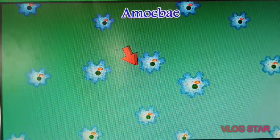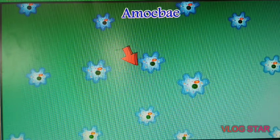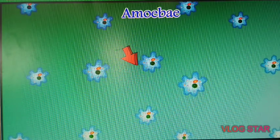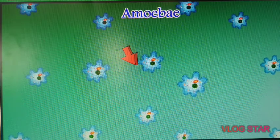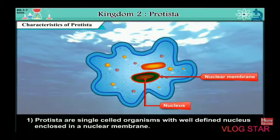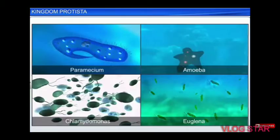Now let's talk about the general characteristics of Protista. First, Protista are single-celled organisms with a well-defined nucleus enclosed in a nuclear membrane. Second, they have pseudopodia, hair-like cilia, or whip-like flagella for locomotion.